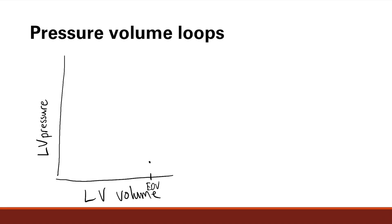What's going to happen after diastole? The left ventricle is going to contract. When it contracts, pressure is going to go way up. What's going to happen to your volume? All your valves right now are closed — your mitral valve is closed, your aortic valve is closed — so your volume is going to remain constant. This is called isovolumetric contraction, where pressure goes straight up and volume remains the same. This is point one to point two.